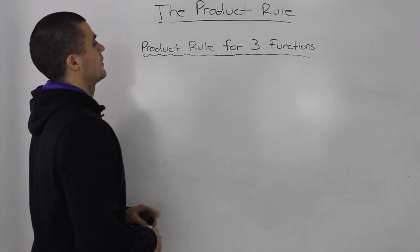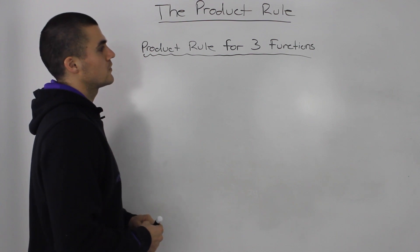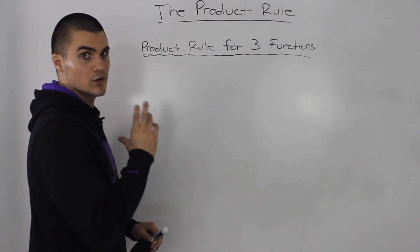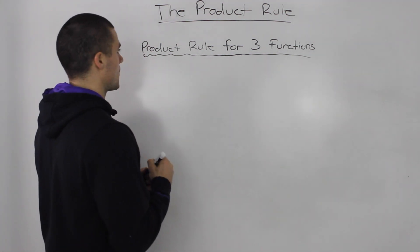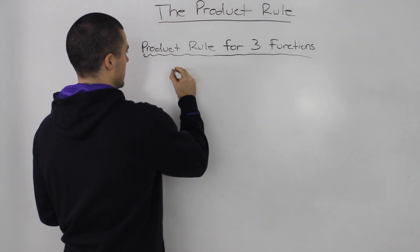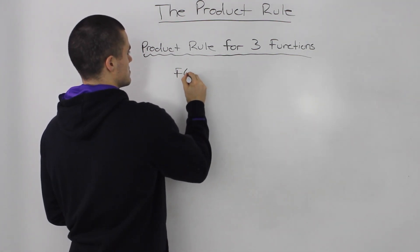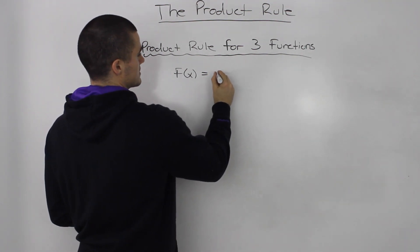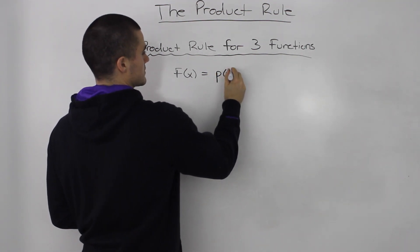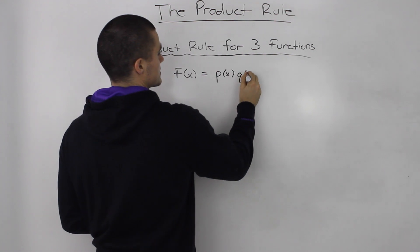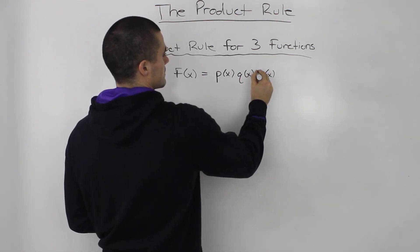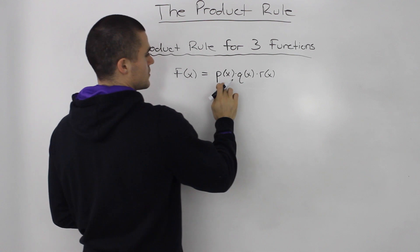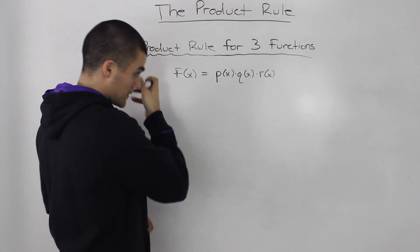Now I want to go over the product rule if we have a function in terms of three functions. Let's say that we have a function here in terms of p(x), q(x), and r(x). These are all multiplied, so three separate functions make up this function.